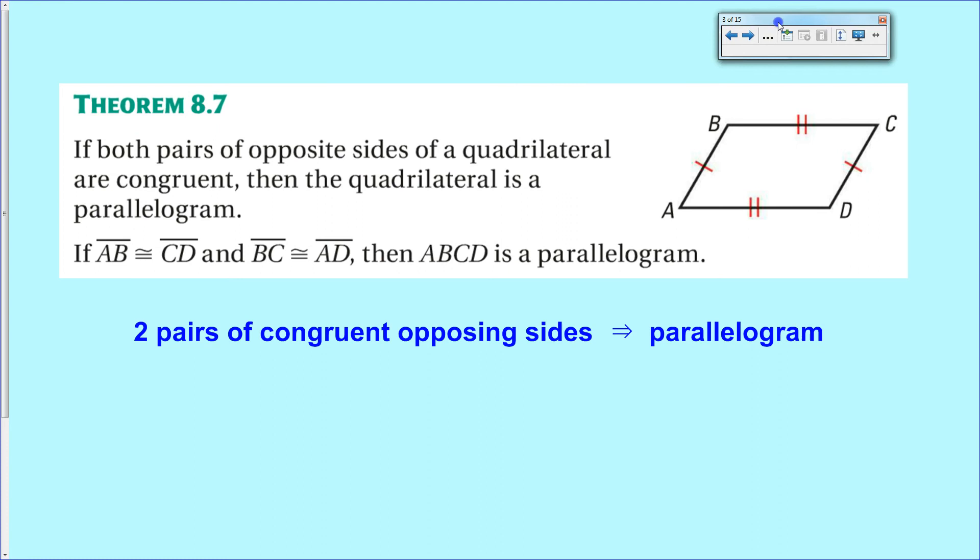We're going to start off with theorem 8.7, and theorem 8.7 is the converse of theorem 8.3. So basically says that if you have two pairs of opposing congruent sides, that forces it to be a parallelogram.